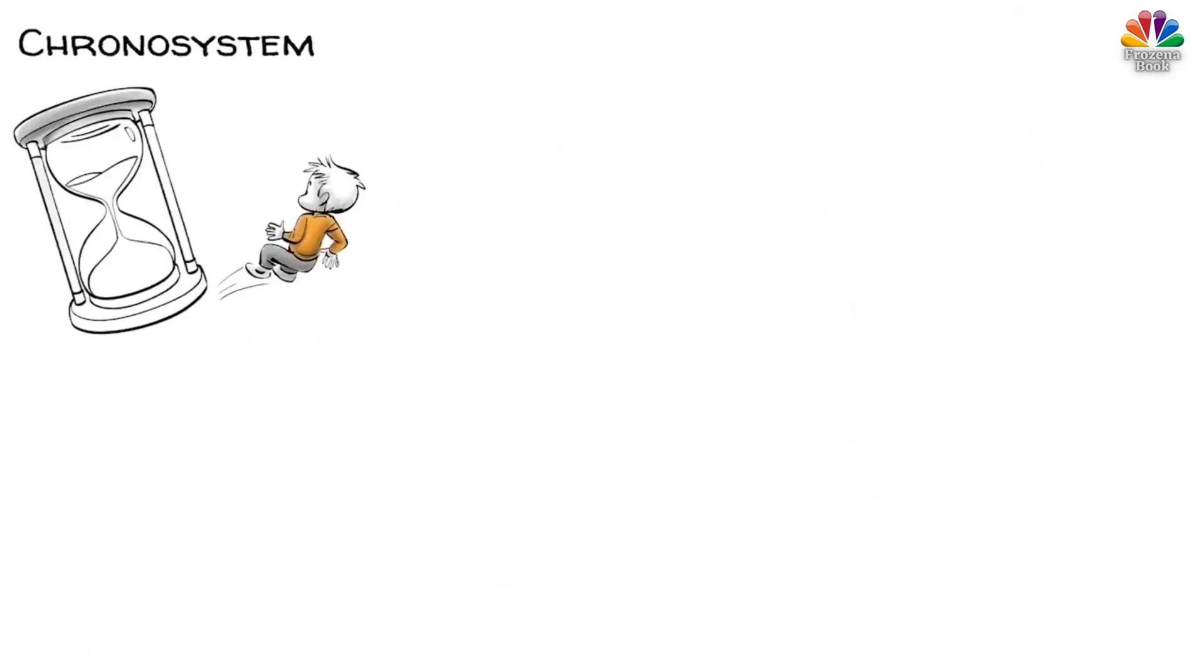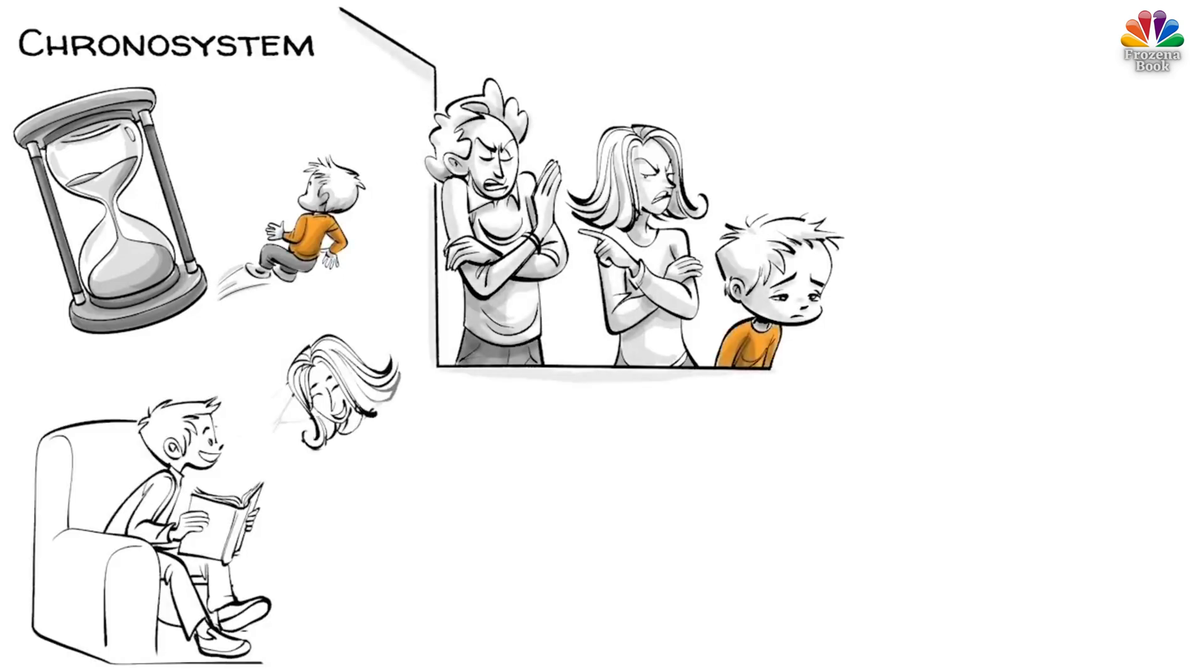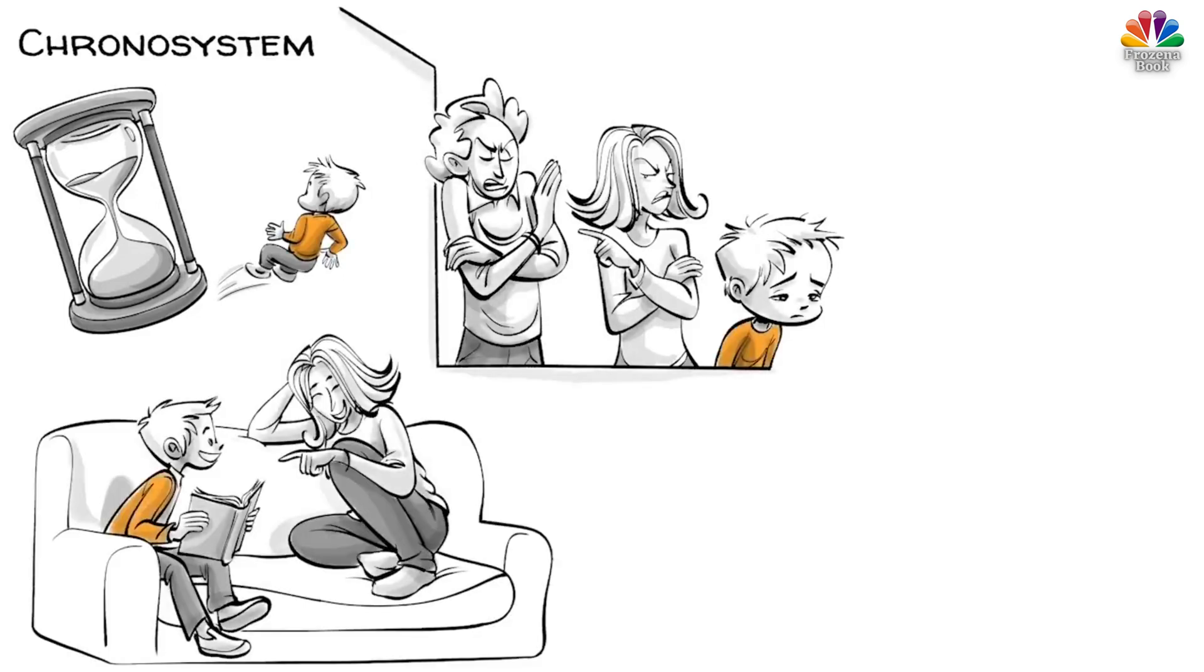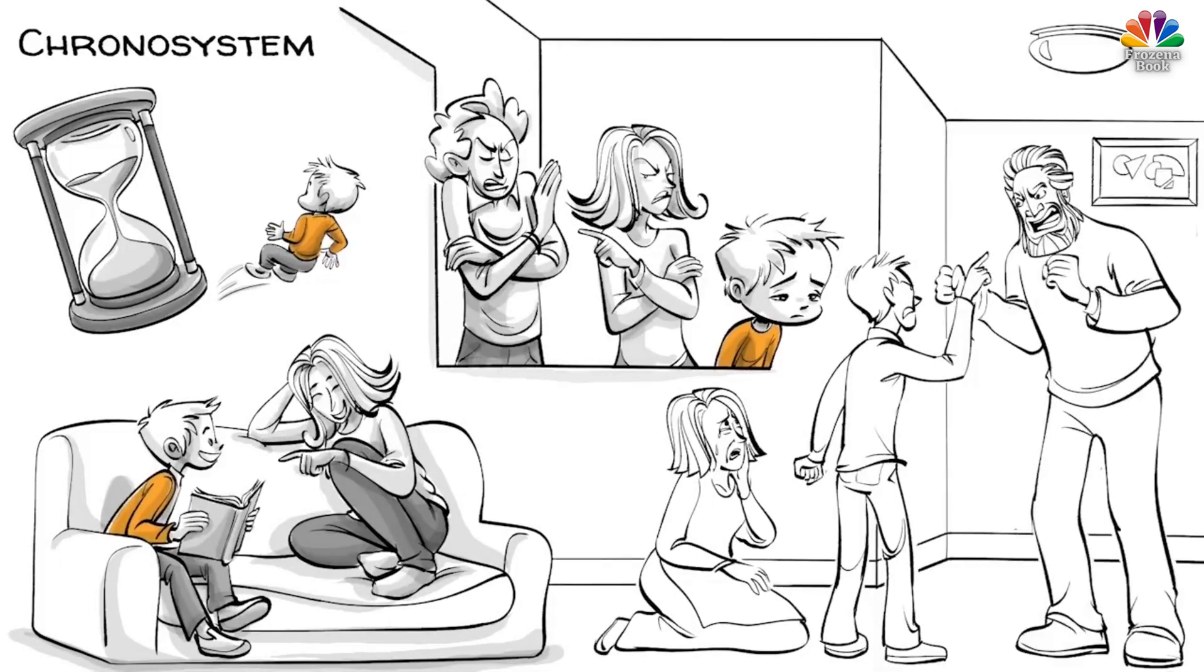The chronosystem refers to changes in the child and the environment over time. As the child grows up, the parents may stop loving each other and divorce, which can be traumatic for an eight-year-old boy. Five years later, he may have come to terms with how things turned out. But when the boy turns 16, his mom's new boyfriend moves into their tiny apartment, and things get difficult again.